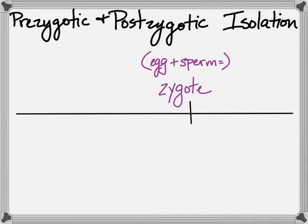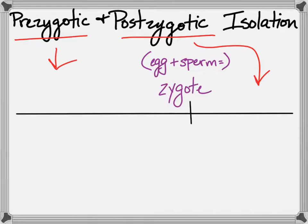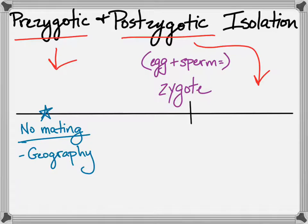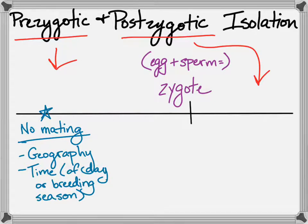I like to look at these isolating mechanisms in three different chunks. The first is one of the prezygotic isolating mechanisms — there's no mating whatsoever. You're isolated reproductively because you don't mate. You might be isolated by geography or time, such as time of day or a breeding season that no longer overlaps, and that could also be mating behavior. Birds are famous for having outrageous mating behaviors that can very quickly become isolating.